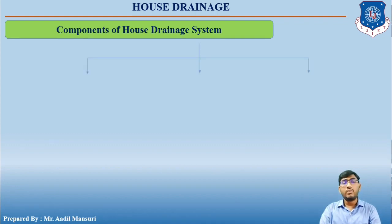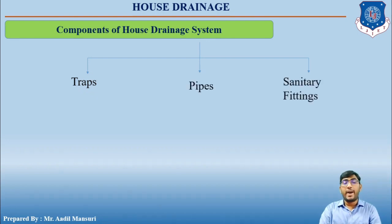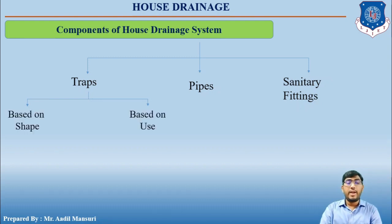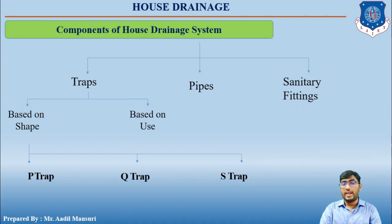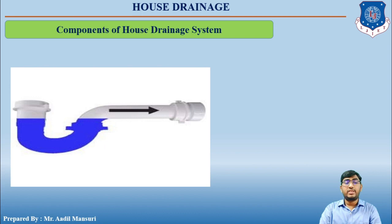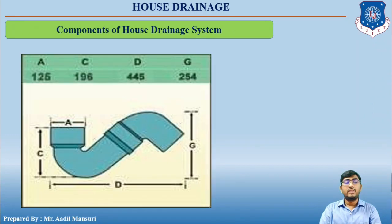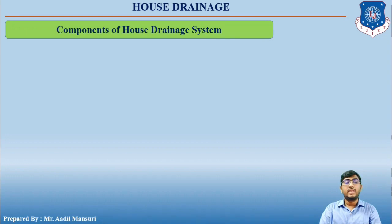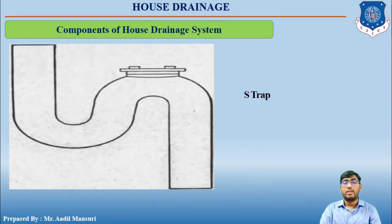Let us now move ahead with the components of the house drainage system. The components include traps, pipes, and sanitary fittings. Traps are classified based on shape and based on usage. Based on shape, there are P-trap, Q-trap, and S-trap. As shown in the pictures, this is a P-trap, this is a Q-trap, and this is an S-trap.